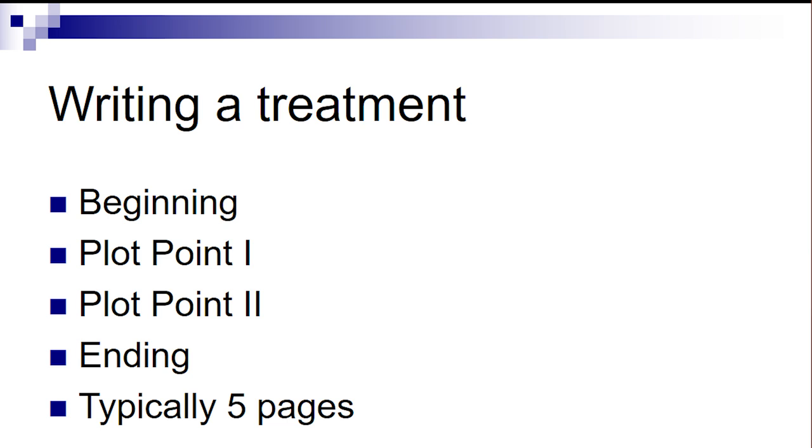To begin writing, you can either do a treatment or an outline. One of the problems with doing an outline is I can't read all of my little notes afterwards. So one of the reasons I suggest a treatment is if you're not going to start writing your script right away and you're going to come back to it months later, you want to understand what you were thinking. Writing a treatment, you've got your beginning, plot point one, plot point two, and your ending — and it's typically five pages long.